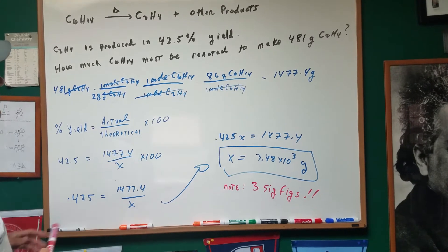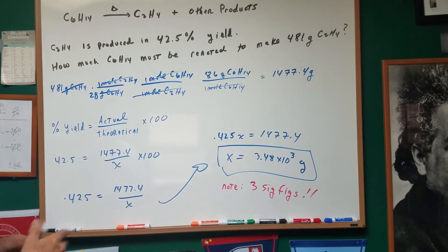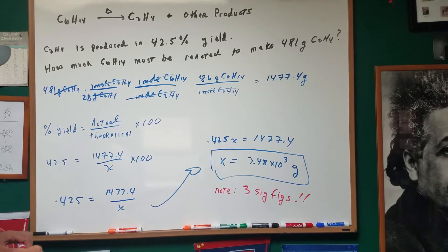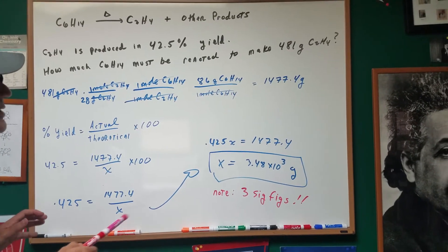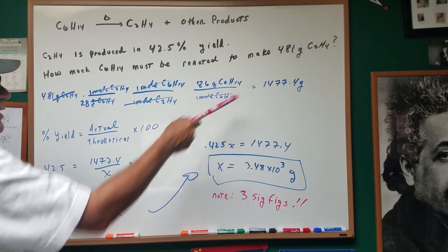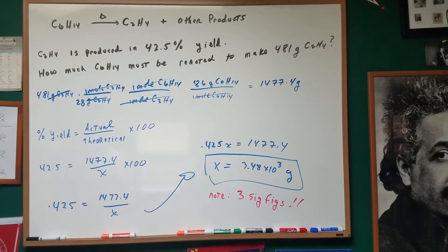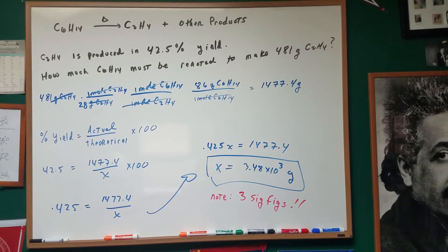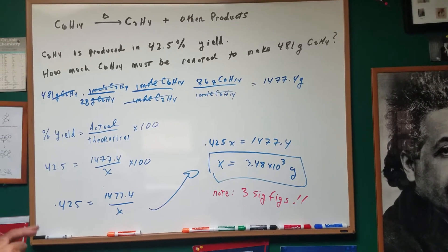We multiply by the weight, or the mass, of the hexane, which is 86 g/mol, and we now get 1477.4 grams.